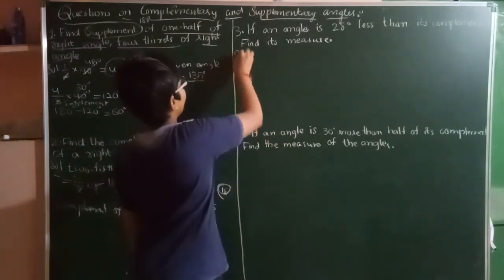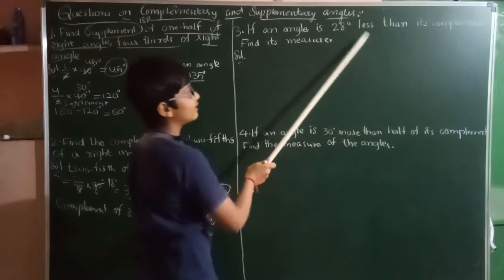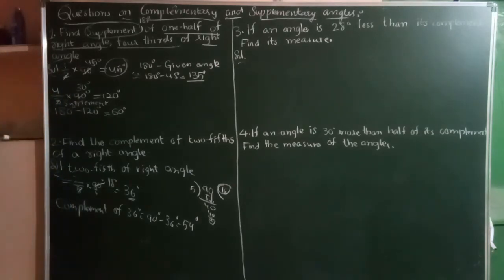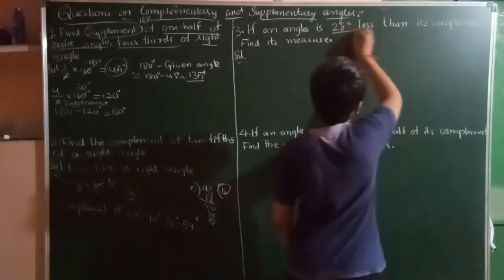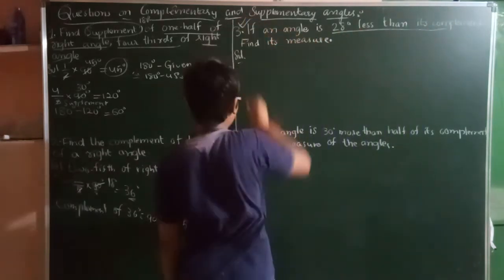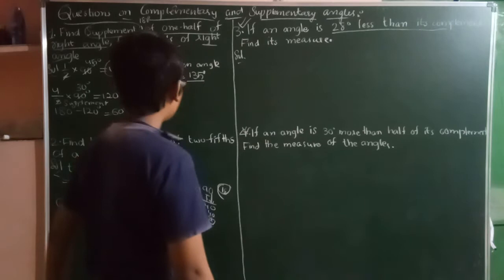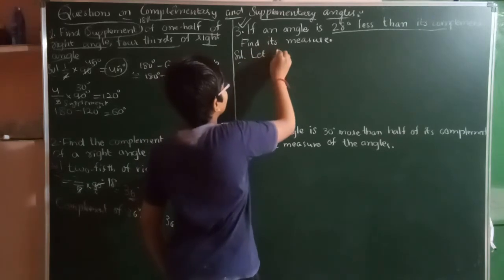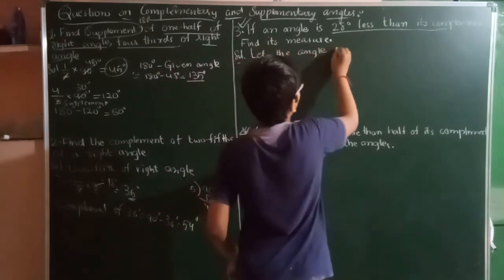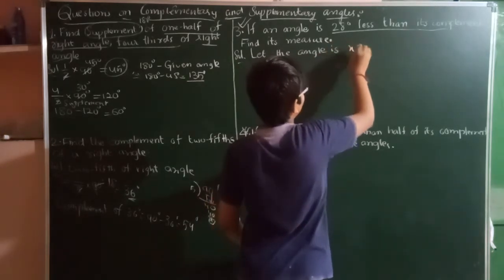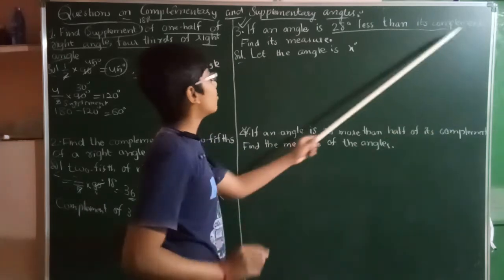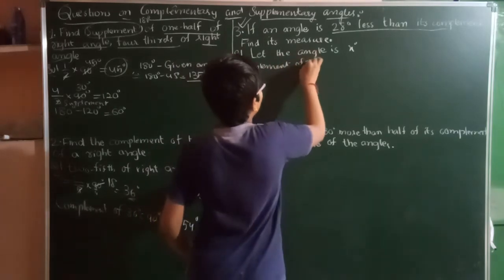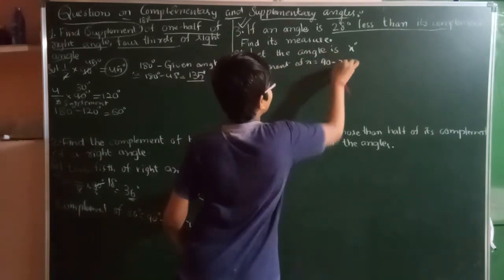Third question: if an angle is 28 degrees less than its complement, find the measure. These are very interesting and very important types of problems. Let the angle be x degrees. Then its complement will be 90 minus x, that is 90 degrees minus x.